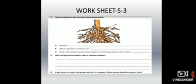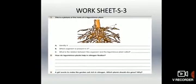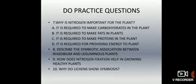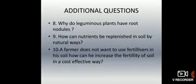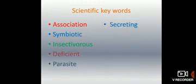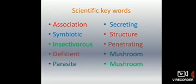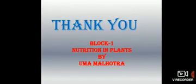Take a screenshot of the worksheet and practice questions, and try all the questions yourself. We are also having scientific keywords to learn: association, symbiotic, insectivorous, deficient, parasite, secreting, structure, penetrating, mushroom. Write these words five times and learn the spellings. Thank you all — have a nice day.